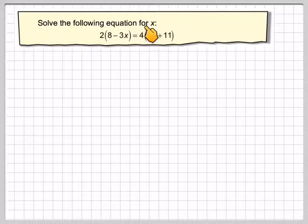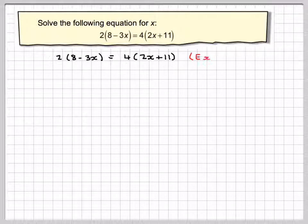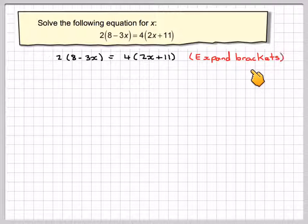Solve the following equation for x: 2(8-3x) = 4(2x+11). So we've got 2 brackets 8 minus 3x close brackets is equal to 4 brackets 2x plus 11. Writing the thing out to begin with, the first thing we need to do is to expand the brackets.